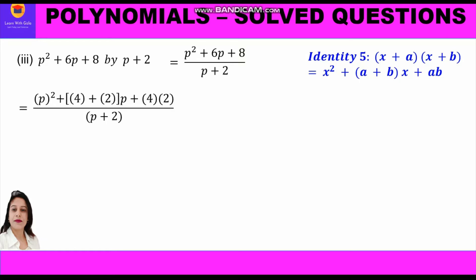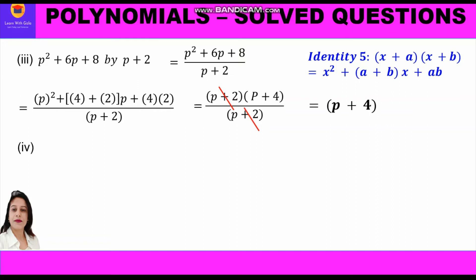So a equals 4 and b equals 2. We substitute these values in the identity and write in the numerator: p² + (4+2)p + (4×2). The factors are (p+2)(p+4) upon (p+2). Now (p+2) cancels, and we get the answer p plus 4.